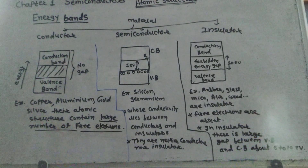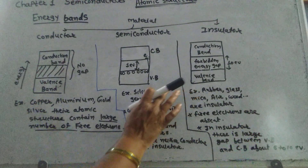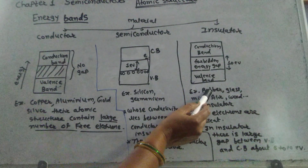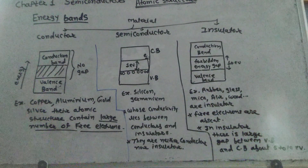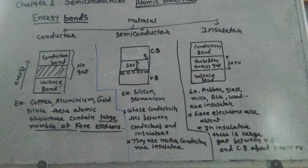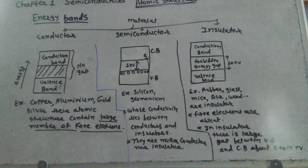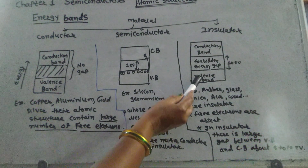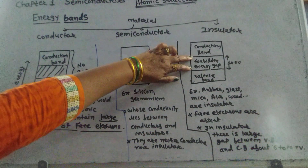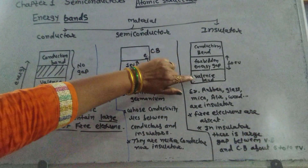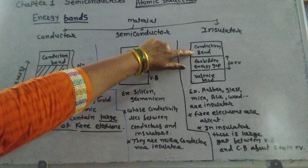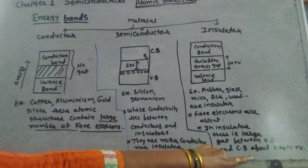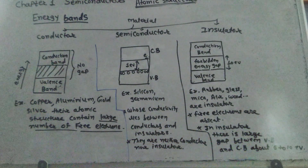This is the diagram of the energy band of an insulator. Examples of insulators are rubber, glass, mica, air, and wood. In an insulator there are no free electrons — free electrons are absent. The forbidden gap energy is very large. This is the valence band, the conduction band, and in between is the forbidden energy gap, which is about 6 to 10 electron volt.